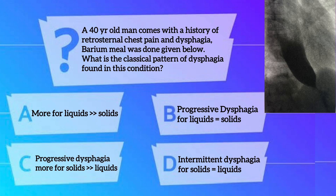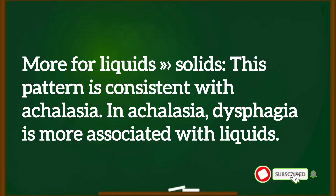Here is the last question for today. A 40-year-old man comes with a history of retrosternal chest pain and dysphagia. A barium meal was done, shown below. What is the classical pattern of dysphagia found in this patient? Options: first, more for liquids than solids; second, progressive dysphagia equally for liquids and solids; third, progressive dysphagia more for solids than liquids; fourth, intermittent dysphagia for both. The right answer is more for liquids than solids — this pattern is consistent with achalasia, where dysphagia is more associated with liquids.